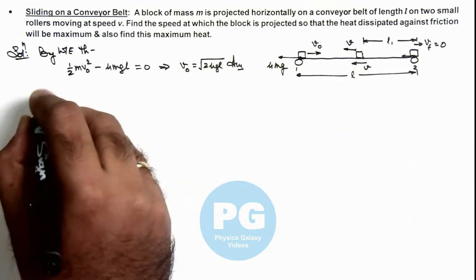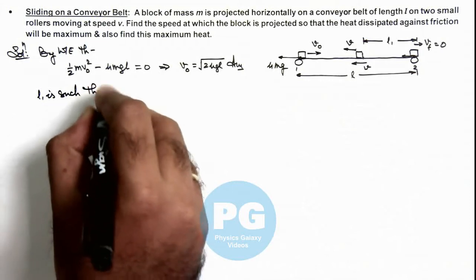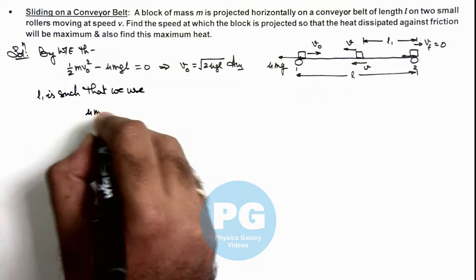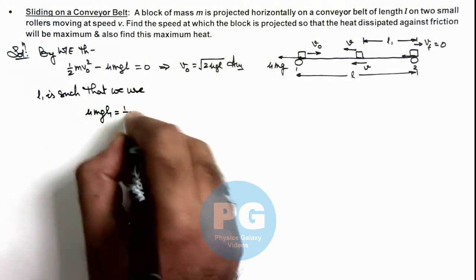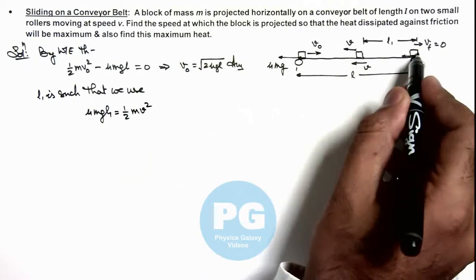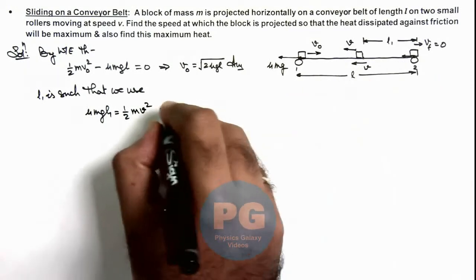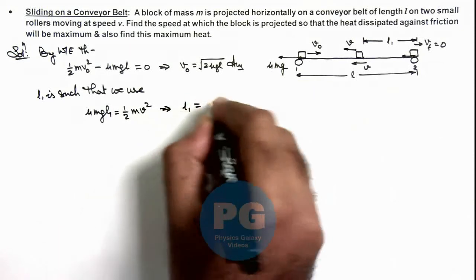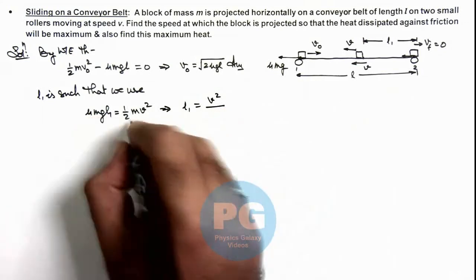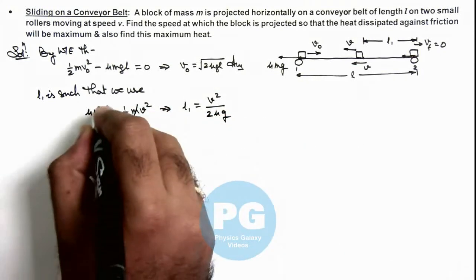We can write that μmg·l₁ = ½mv², since the block starts moving with speed v and from this point it was starting with zero speed. So the value of l₁ we are getting is v²/(2μg), where m cancels out.